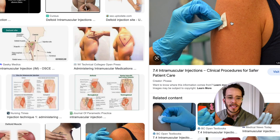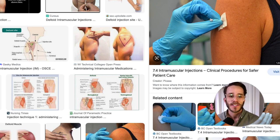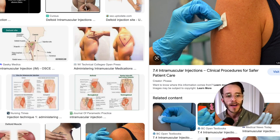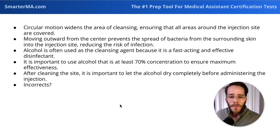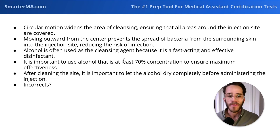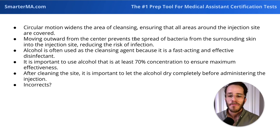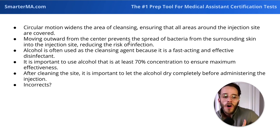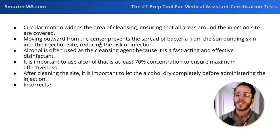What does that mean? Say the deltoid — the shoulder — is our injection site. You're going to start from the center of the injection site and move your hand with the alcohol pad in a circular motion, starting from the center and gradually moving outward. This widens the area of cleansing, making sure you get far enough around the injection site. Moving from the center outward prevents moving bacteria from outside the skin inward, ensuring we're always pushing bacteria outward and reducing the risk of infection.